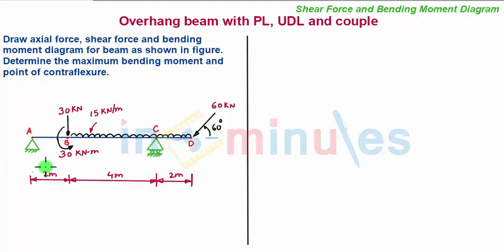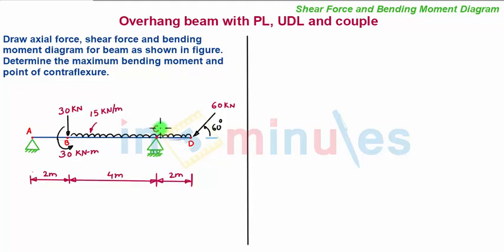Determine the maximum bending moment and the point of contra flexure. In this problem, the load diagram is given. We see that it is a simply supported beam with a hinge support at one end and a roller support on the other end. However, the beam is not ending at point C where the roller support acts — it extends to point D. This extended part is considered the overhang, and hence the beam is called an overhang beam.